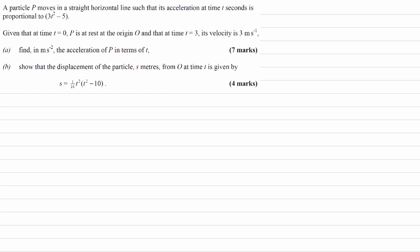A particle P moves in a straight horizontal line such that its acceleration at time t seconds is proportional to 3t squared minus 5. So if A is proportional to this, we can write that as an equation: A is equal to some proportionality constant times 3t squared minus 5.